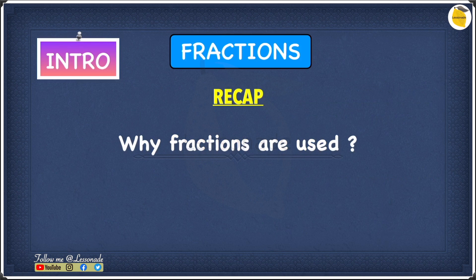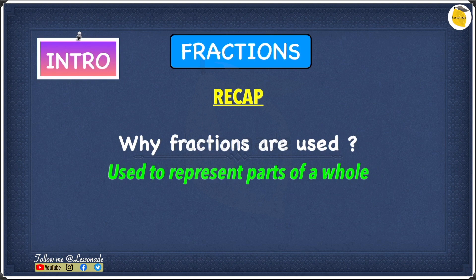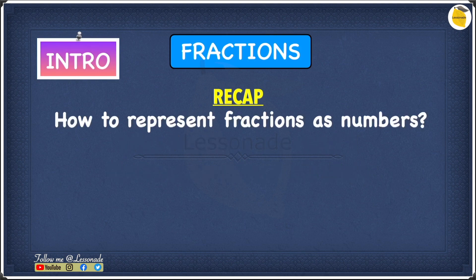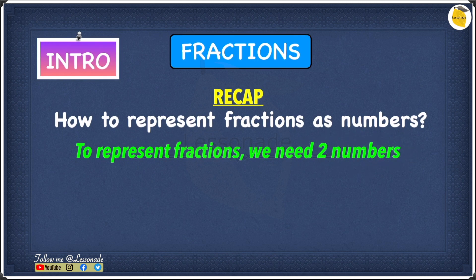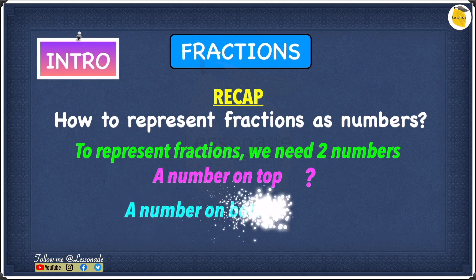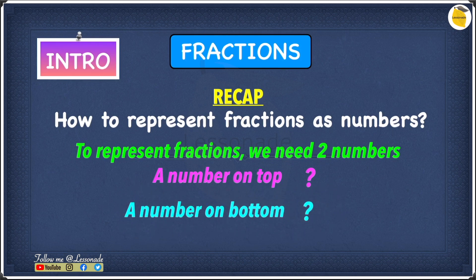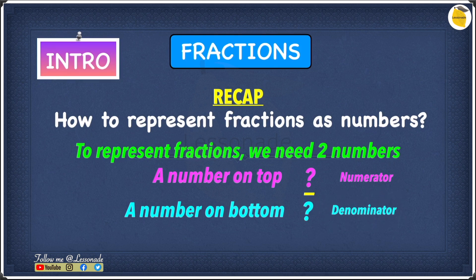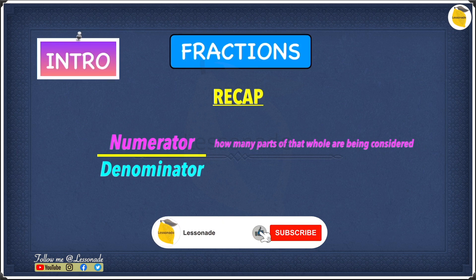Let's have a quick recap. Fractions are used to represent parts of a whole. To represent fractions as numbers we need two numbers: a number on top and a number on the bottom, separated by a line in the middle. The number on top is called the numerator and the number on the bottom is called the denominator. The numerator tells us how many parts of the whole are being considered, and the denominator tells us the total number of parts in the whole.